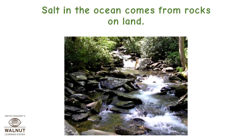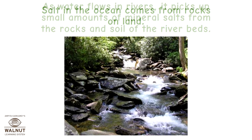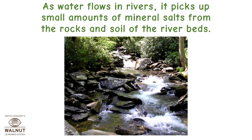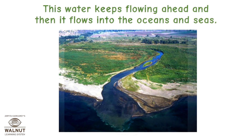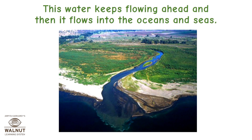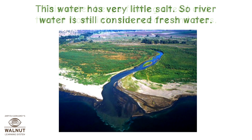Salt in the ocean comes from rocks on land. As water flows in rivers, it picks up small amounts of mineral salts from the rocks and soil of the riverbeds. This water keeps flowing and then flows into the oceans and seas. This water has very little salt, so river water is still considered fresh water.